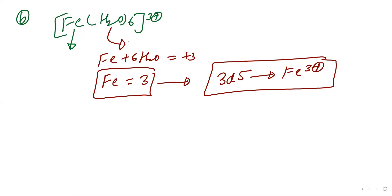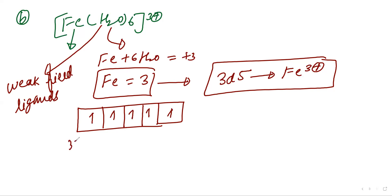But water is weak field ligand. There are total five d orbitals. I will distribute one, two, three, four, five. Total five unpaired electrons.